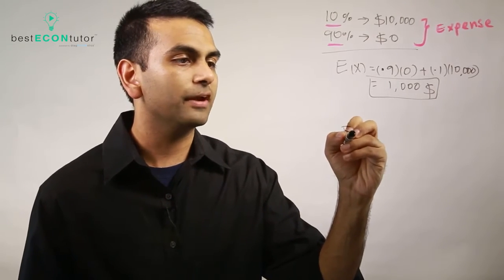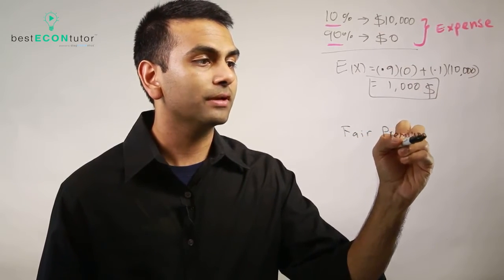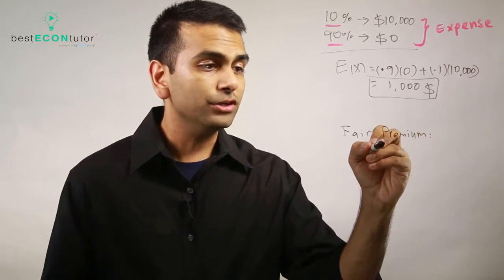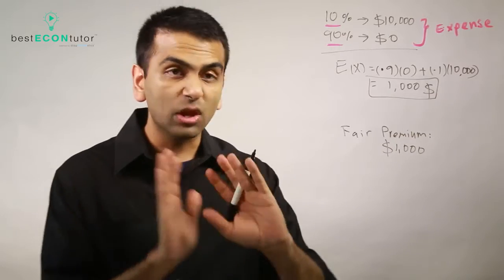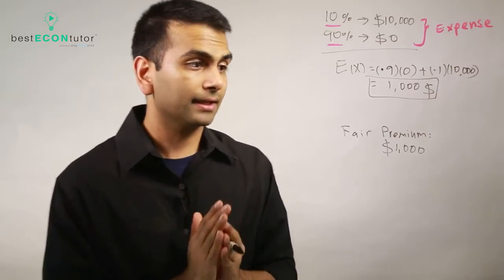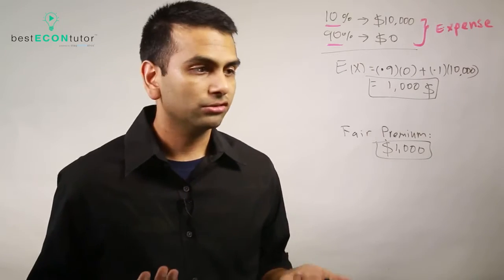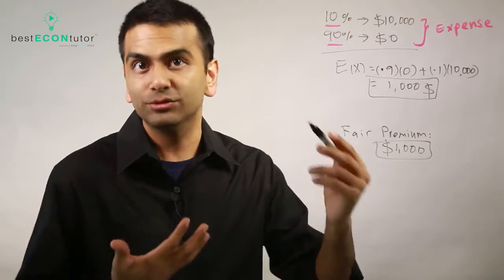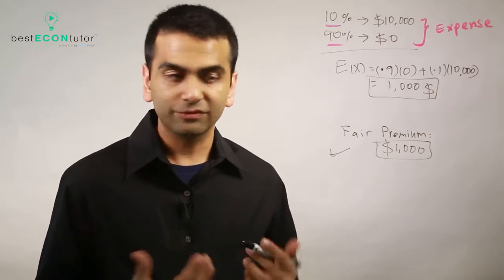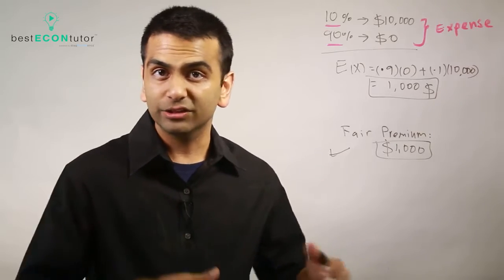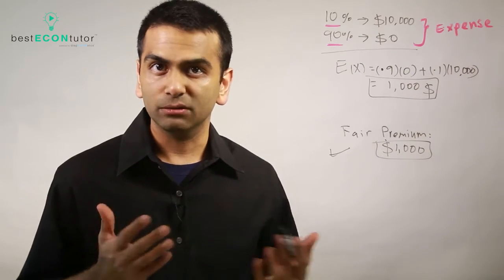Suppose somebody offers this risk averse person what's called a fair — or actuarially fair — premium of one thousand dollars. They say: pay one thousand dollars, and if your car gets totaled we'll cover the full ten thousand. Either way the expected value is the same as bearing the risk alone. But as a risk averse person, I get way more utility from the certain payment than from facing the risky outcome.